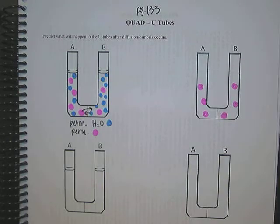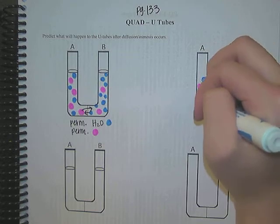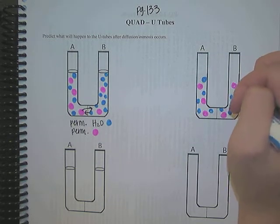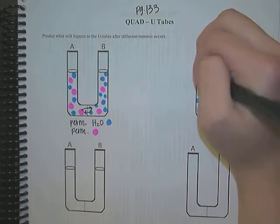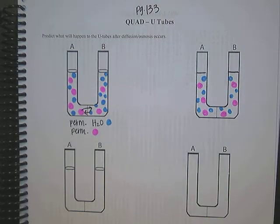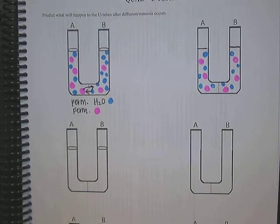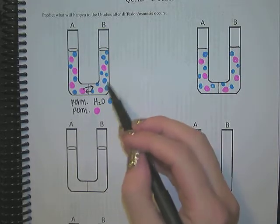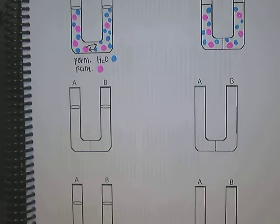We're going to end up with both of them being equal on both sides — the same concentration on the left and the right for both my water and my solutes. So they're going to still be at equal heights. Where it starts to get a little trickier is when your semi-permeable membrane is not permeable to whatever is passing through. So let's say in my second example...